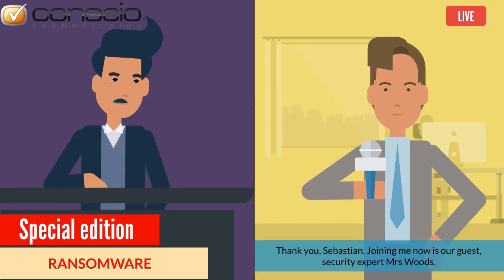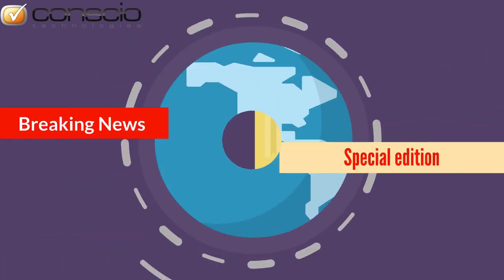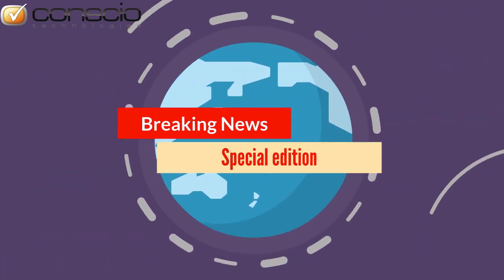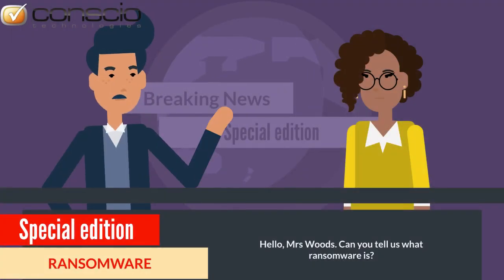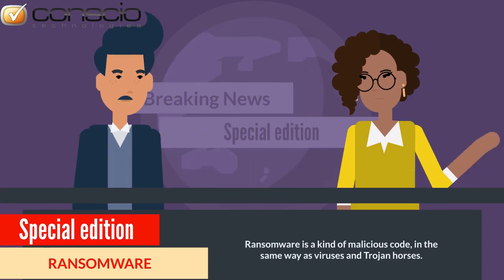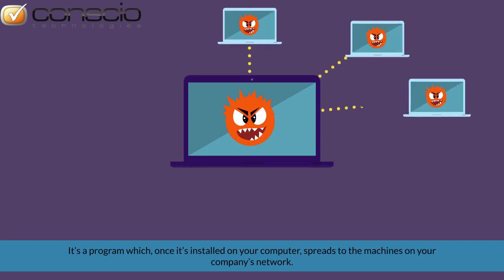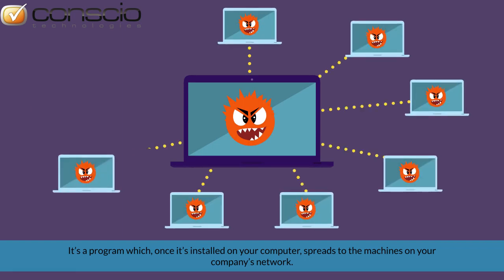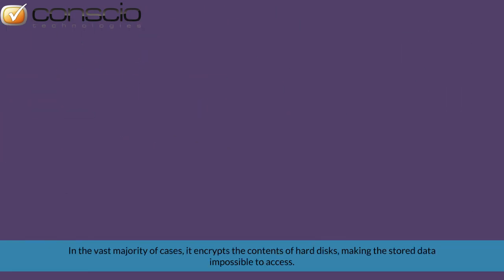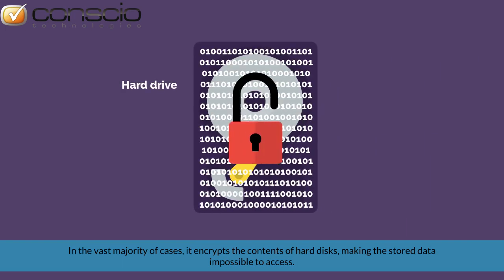Thank you, Sebastian. Joining me now is our guest, security expert Mrs. Woods. Can you tell us what ransomware is? Ransomware is a kind of malicious code, in the same way as viruses and Trojan horses. It's a program which, once installed on your computer, spreads to the machines on your company's network. In the vast majority of cases, it encrypts the contents of hard disks, making the stored data impossible to access.